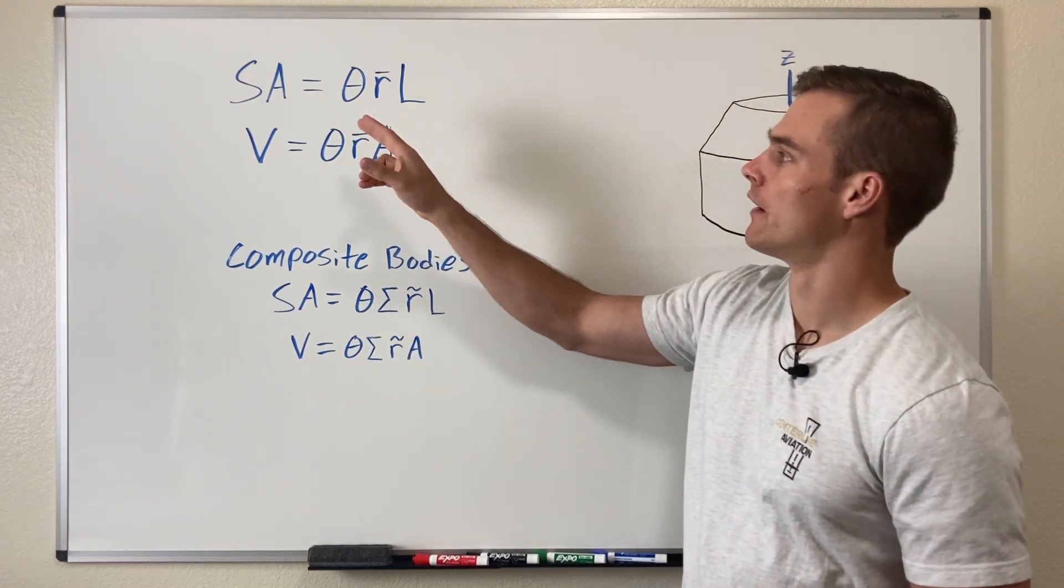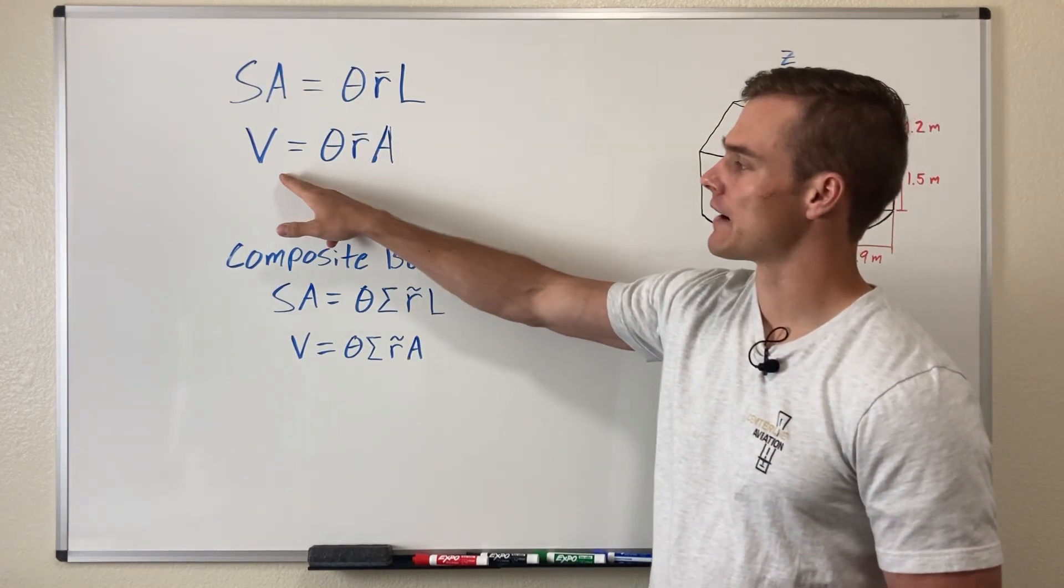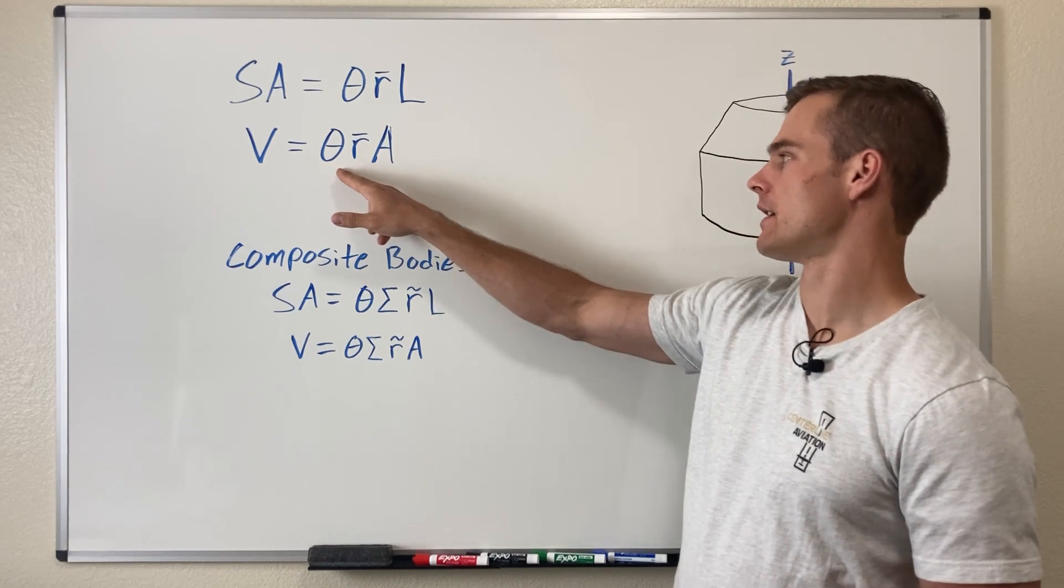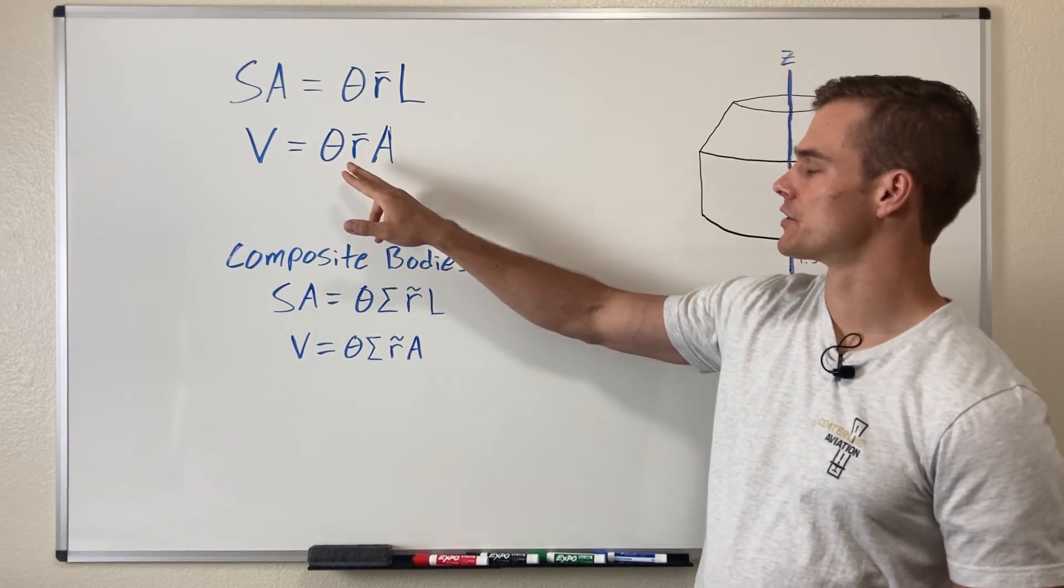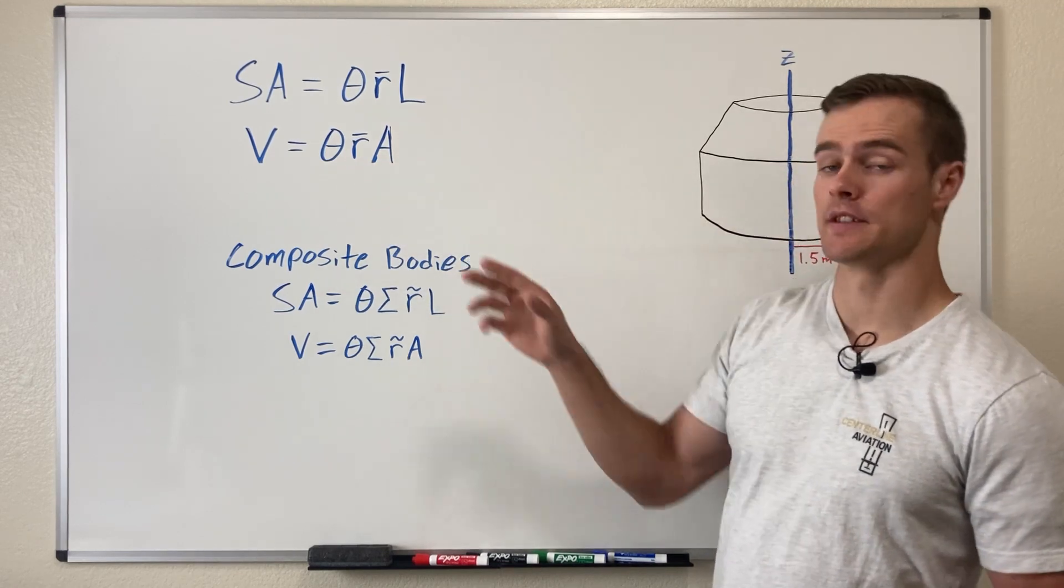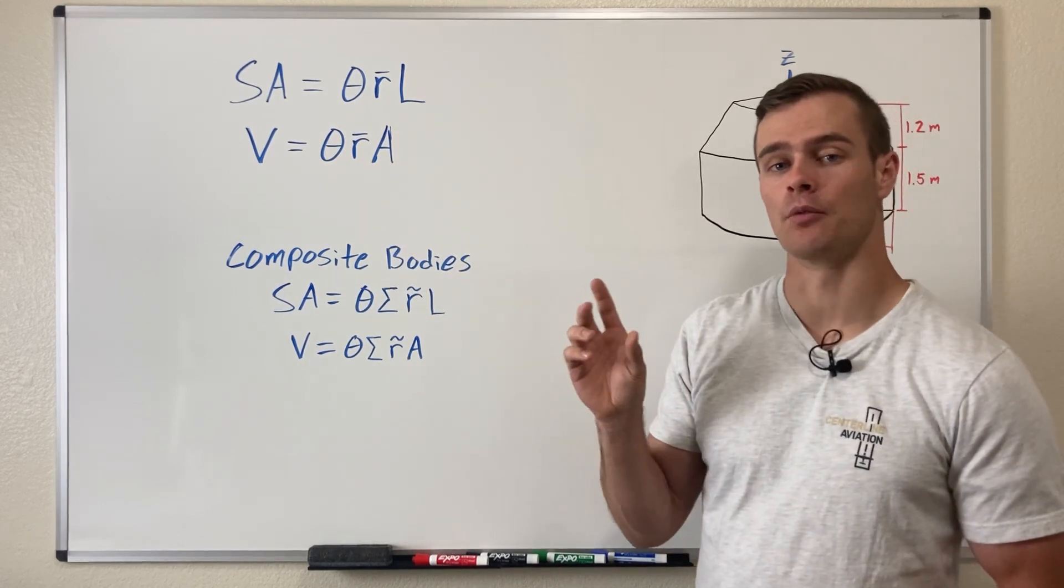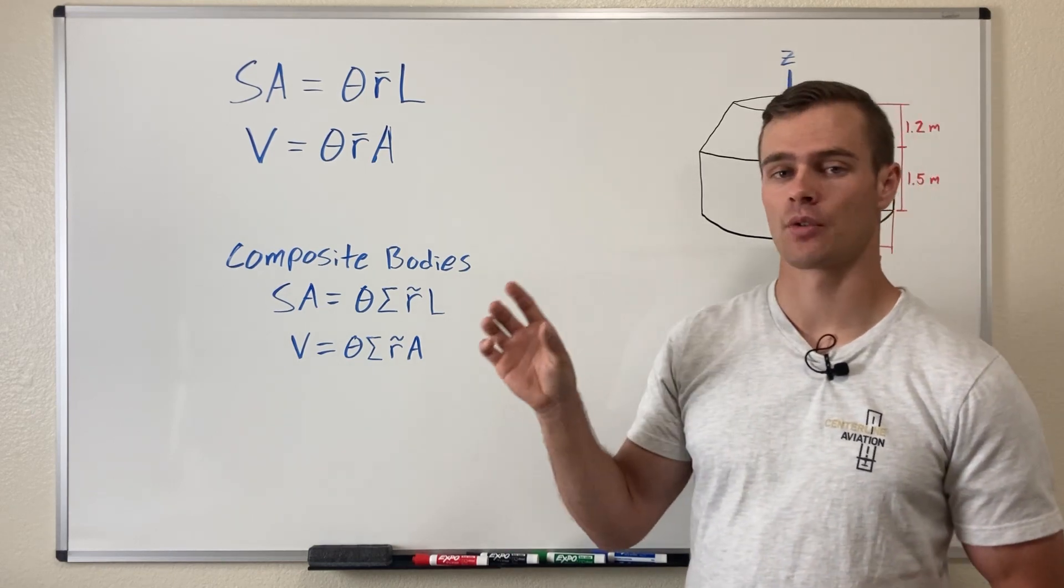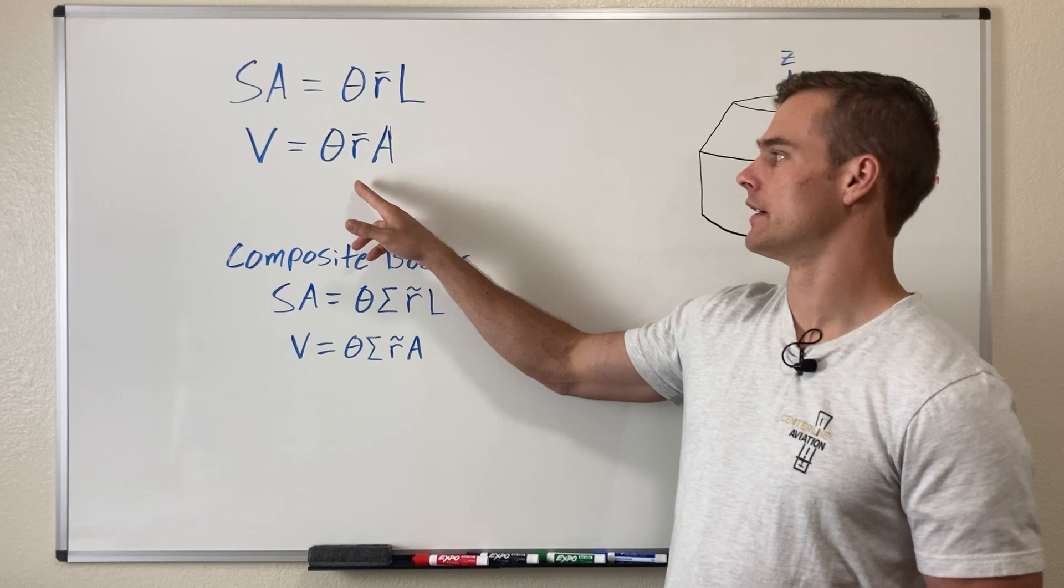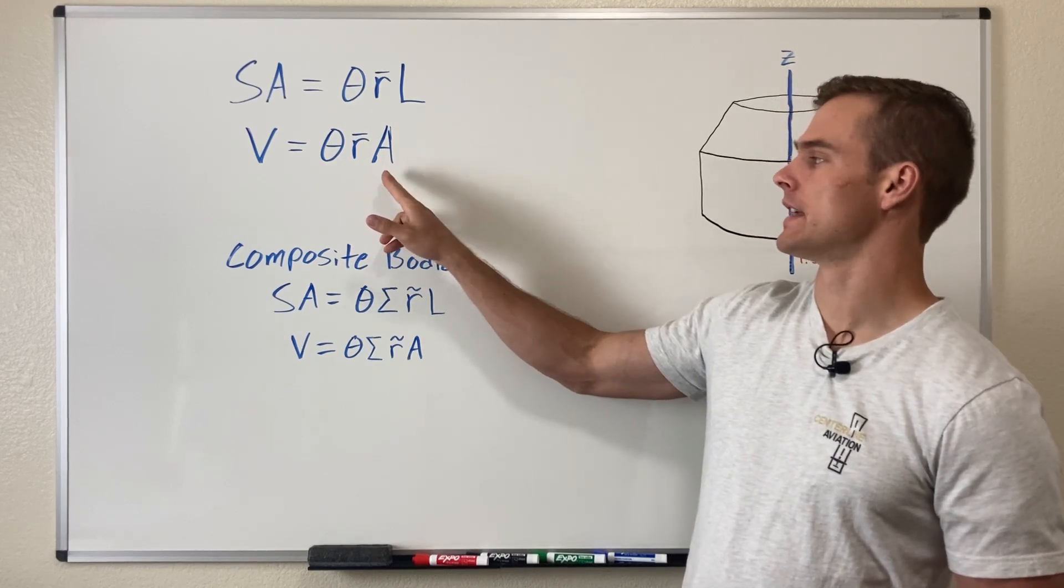Similarly, the volume is theta, which is again the angle of rotation measured in radians, multiplied by R bar, which is the perpendicular distance between the axis of rotation and the centroid of the generating area, and A is that generating area.